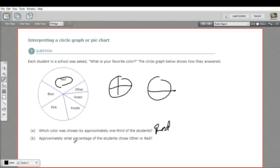And then B says approximately what percentage of the students chose other or red. So we want to take red and other and say, what percent is that?